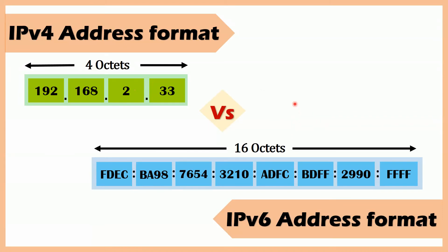The given diagram shows the IPv4 and IPv6 address formats. The IPv4 address is a 32-bit address having 4 octets, each of 8 bits in size, and can have any number in the range of 0 to 255, with each block separated by dots. On the other hand, the IPv6 address is a 128-bit address having 16 octets and 8 fields, each field 16 bits in size and separated by colons. The IPv6 address is represented by 32 hexadecimal digits.